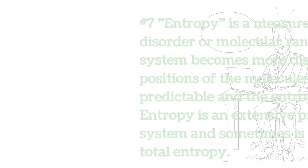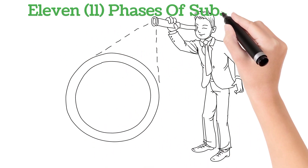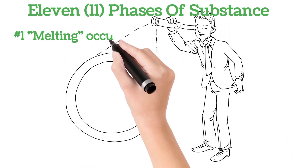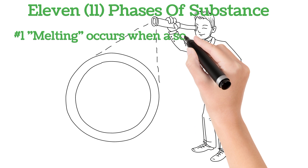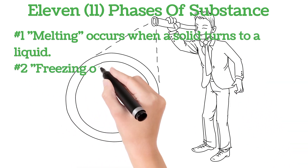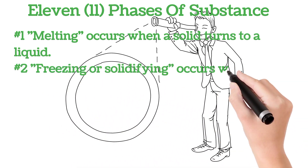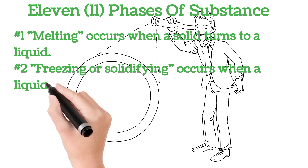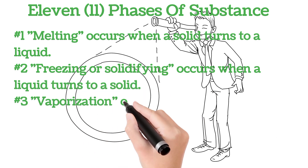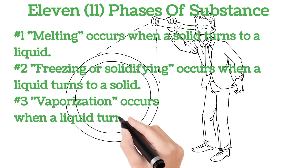Next: eleven phases of a substance. Number one: melting occurs when a solid turns to a liquid. Number two: freezing, or solidifying, occurs when a liquid turns to a solid.